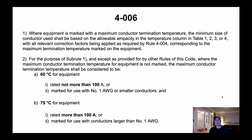It says here: where equipment is marked with the maximum conductor termination temperature, the minimum size of the conductor used shall be based on the allowable ampacity in the temperature columns in Tables 1, 2, 3, or 4 — with all relevant correction factors being applied as required by Rule 4-004 — corresponding to the maximum termination temperature marked on the equipment. That is the one thing I didn't mention.